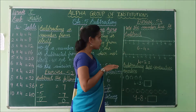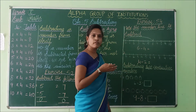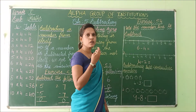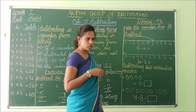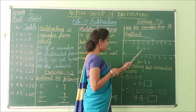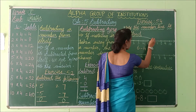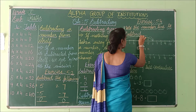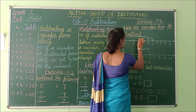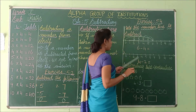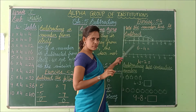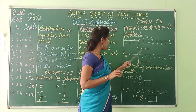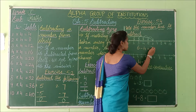If it is addition, you will move forward. If it is subtraction, you have to come backward. So for 6 minus 4, count back: 1, 2, 3, 4 — and it stops at number 2. So 6 minus 4 is 2.